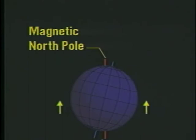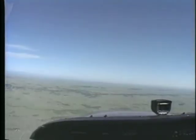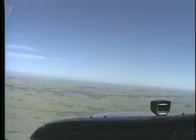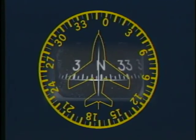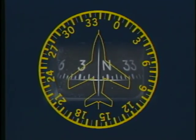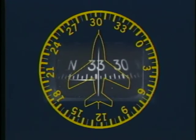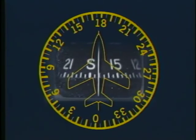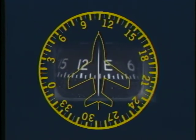The compass is also affected by magnetic dip, which is the tendency of a compass to point down and toward the magnetic poles. This error is greatest when you're near the poles. As a result of magnetic dip, your compass will give an incorrect reading when you turn, accelerate, or decelerate. In the northern hemisphere, a turn from a northerly heading results in the compass initially indicating a turn in the opposite direction, then lagging behind the actual heading. This lag decreases as you approach an easterly or westerly heading. In a turn from south, the compass will indicate the proper turn but will lead the actual heading. As in a turn from north, this error diminishes as the turn approaches east or west.